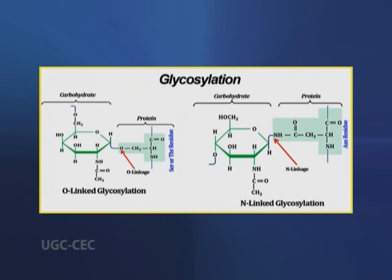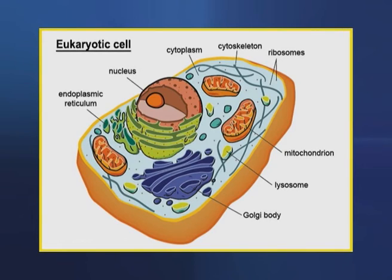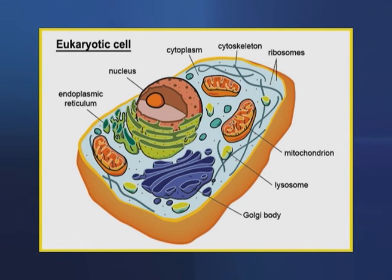Or through an N-glycosyl link to the amide nitrogen of an asparagine residue. Some glycoproteins have a single oligosaccharide chain, but many have more than one. Many of the proteins secreted by eukaryotic cells are glycoproteins, including most of the proteins of blood.